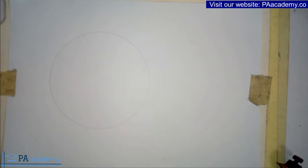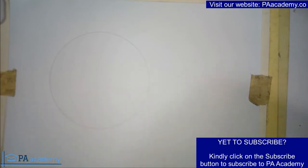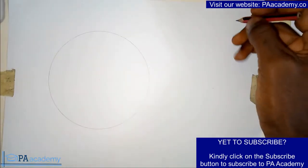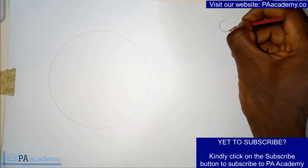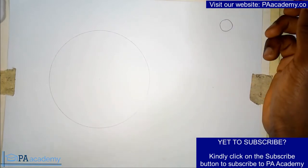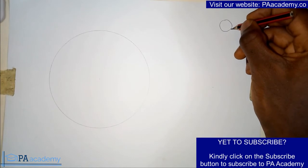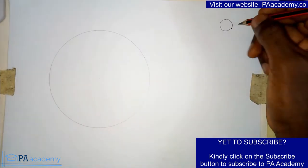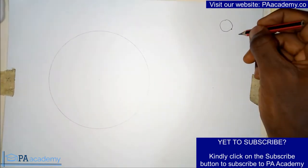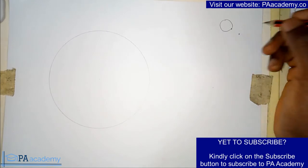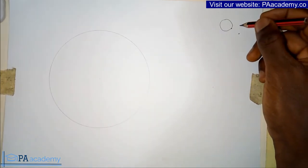Hello and welcome to PA Academy. In this video I'm going to be showing you how to draw a circle to pass through a given point on the circle and also touch a point outside the circle. So if you have a given circle, you're asked to draw another circle to touch a point on the circumference and also touch a point outside the circle.